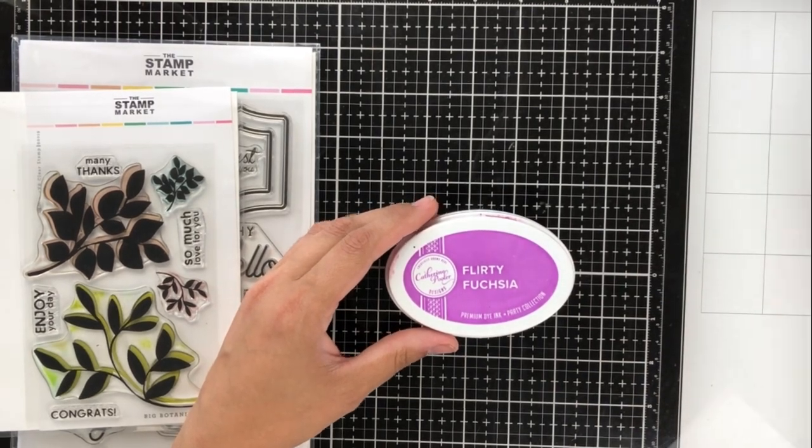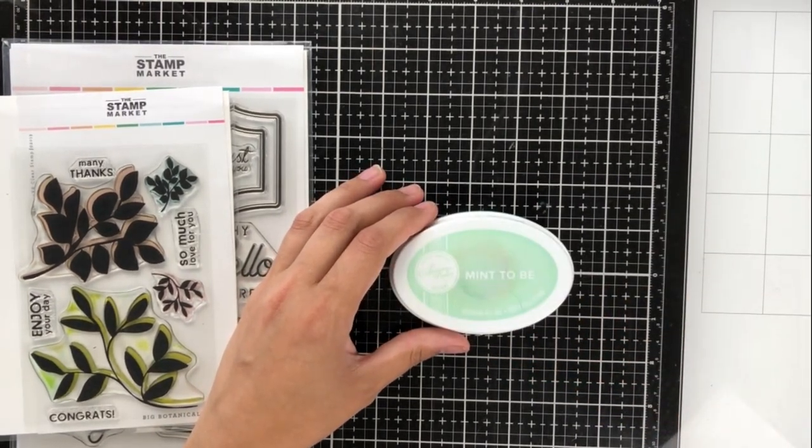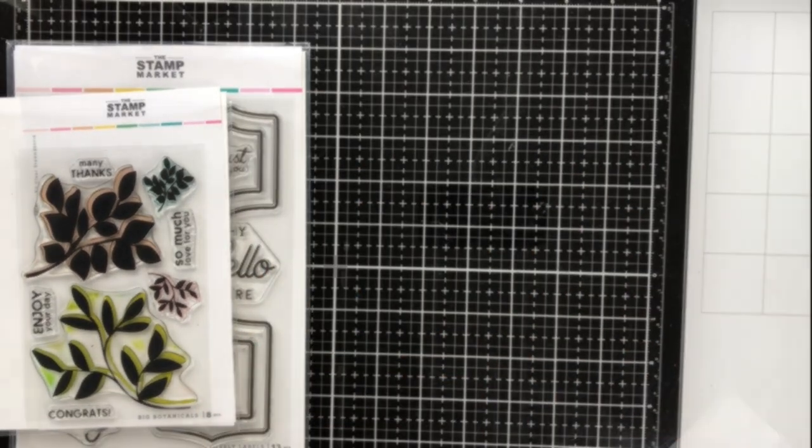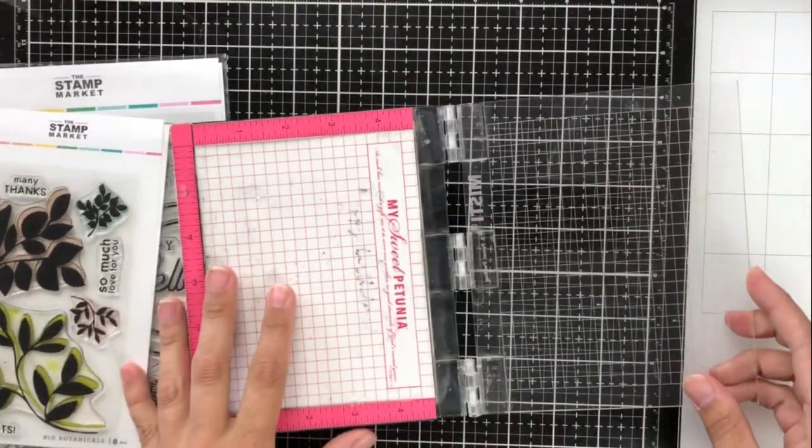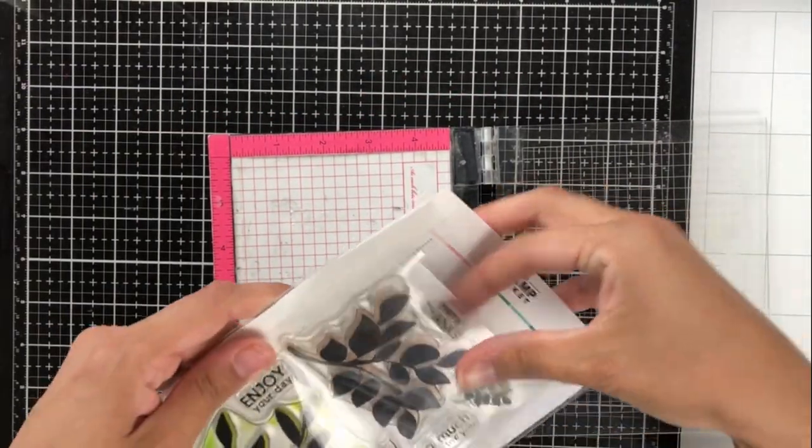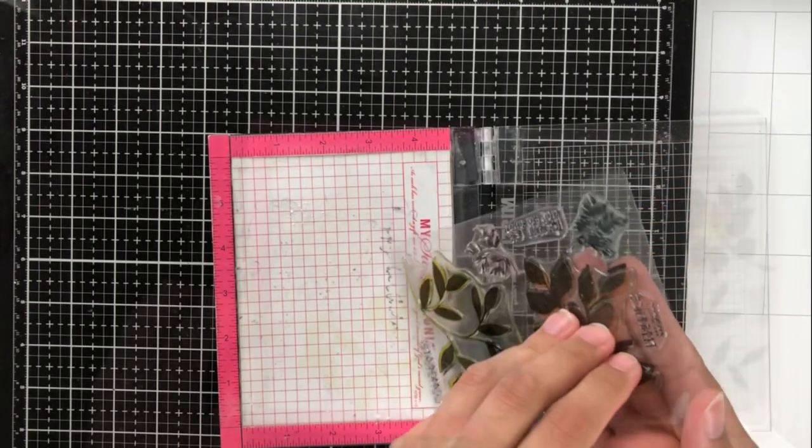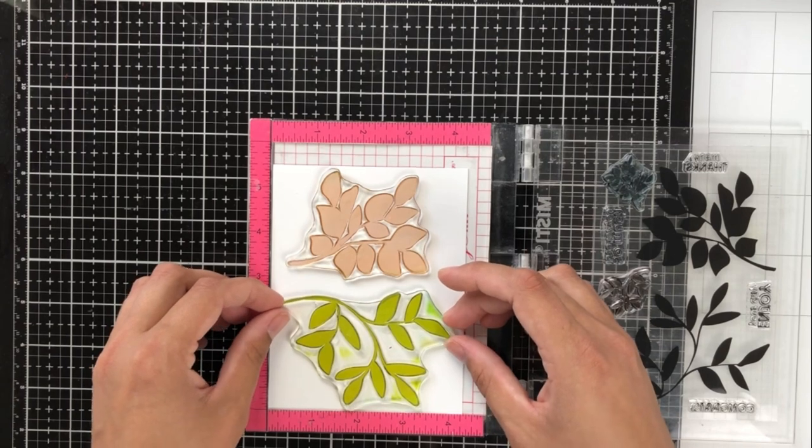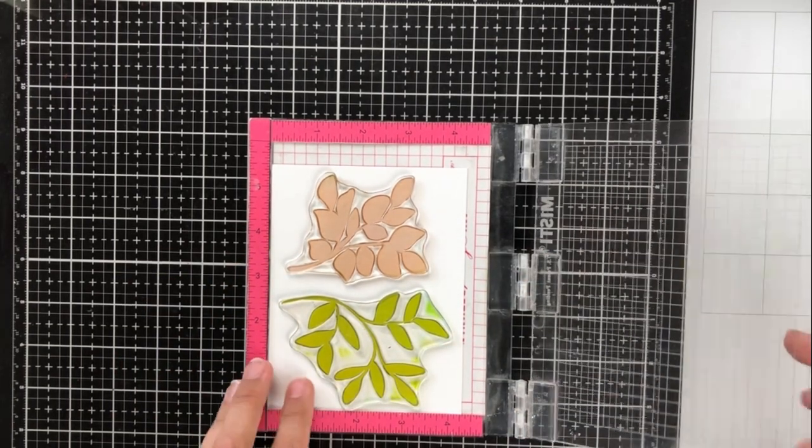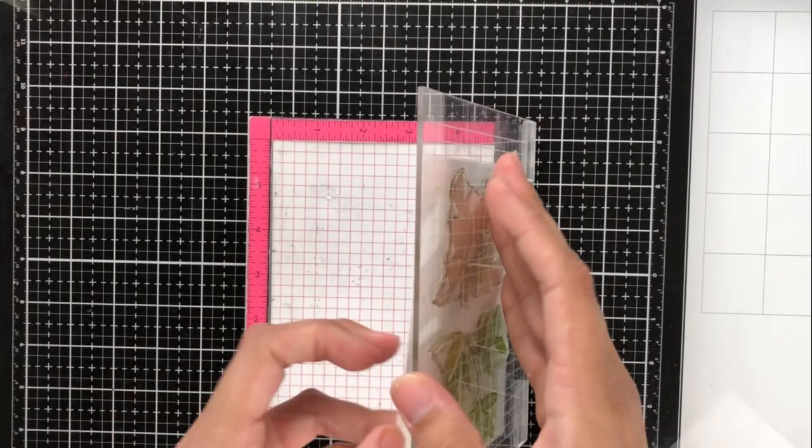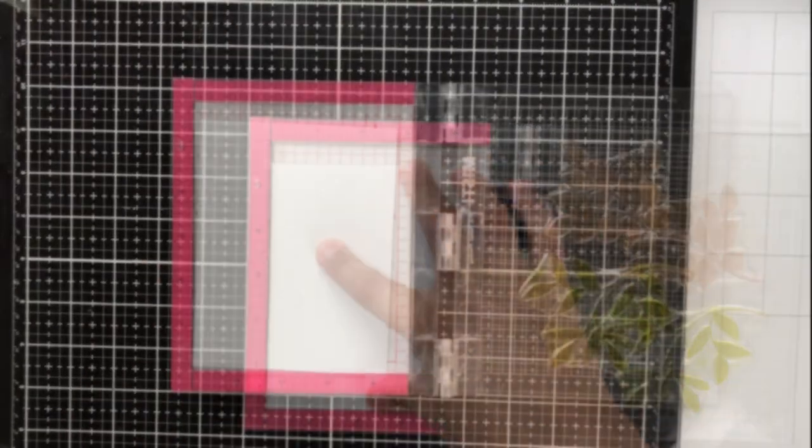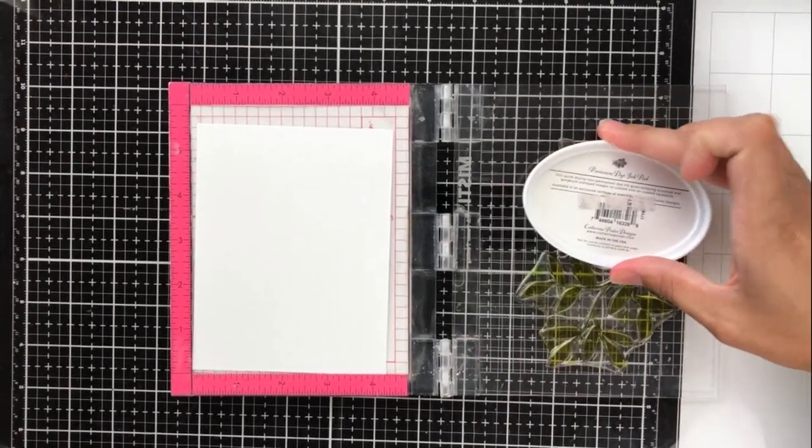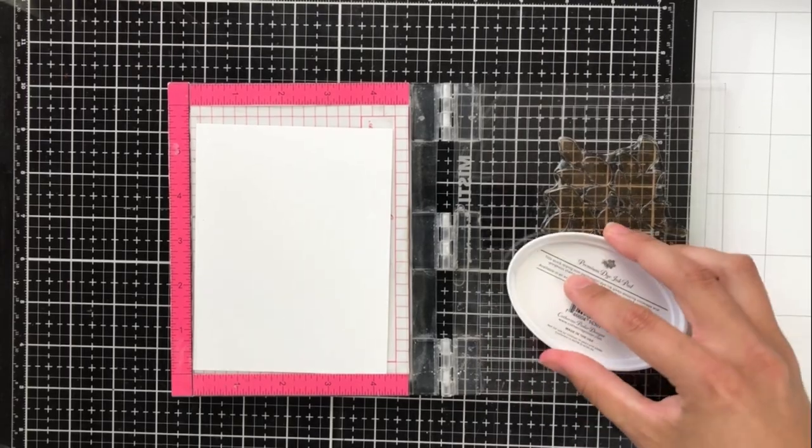So I'm going to be using some Catherine Pooler inks in eucalyptus, flirty fuchsia, mint to be, and sienna. I really love that the stamp market uses a lot of these colors together most of the time, and I wanted to show that in my projects today. So I'm going to pull out my mini MISTI here and just stamp these two botanical images together. It makes it really easy when you use your MISTI because I only need to do it once, even if I want to use several colors. So here I'm going to stamp both colors.